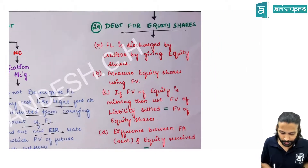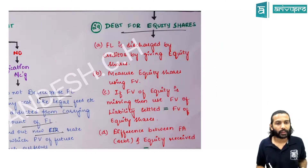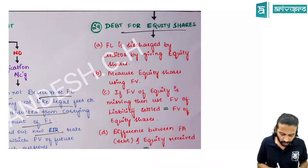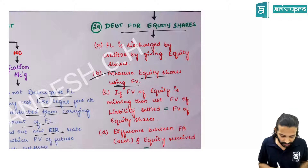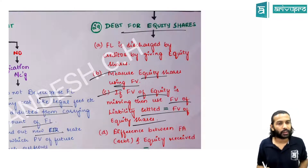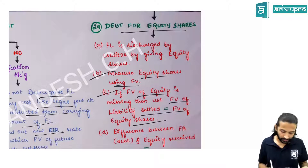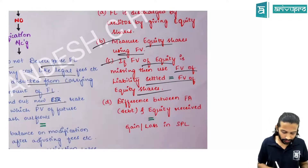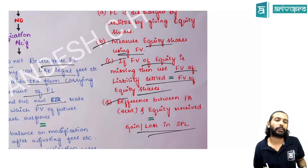Debt-for-equity swaps: instead of paying cash, the debtor issues equity shares. Those equity shares are recorded at fair value. If fair value of equity shares cannot be measured, use the fair value of the liability transferred as the fair value of the equity shares. Any difference goes to P&L.